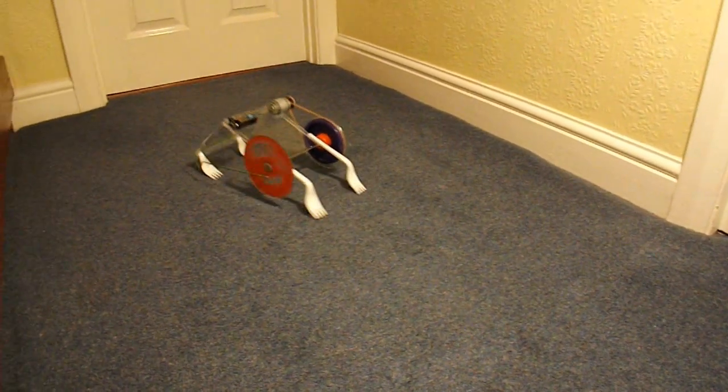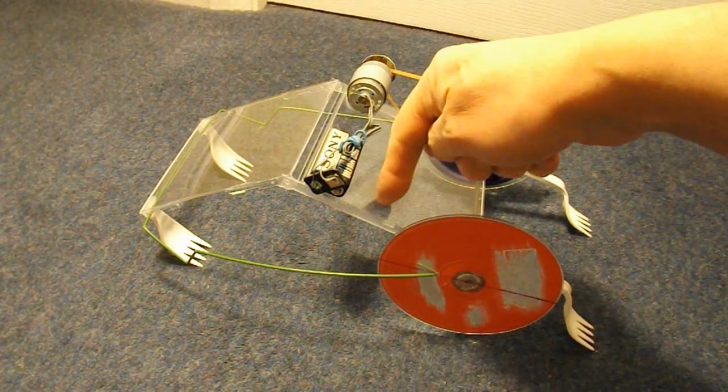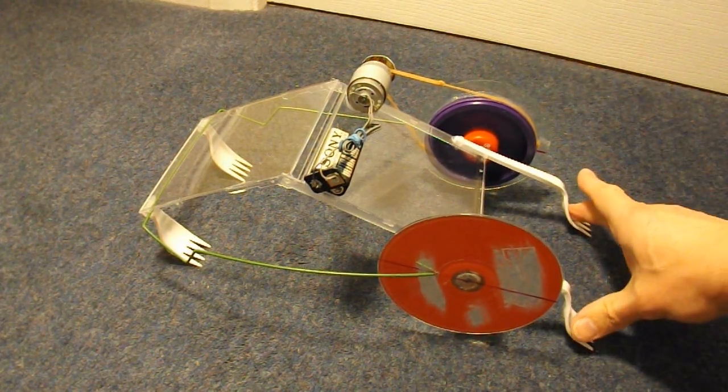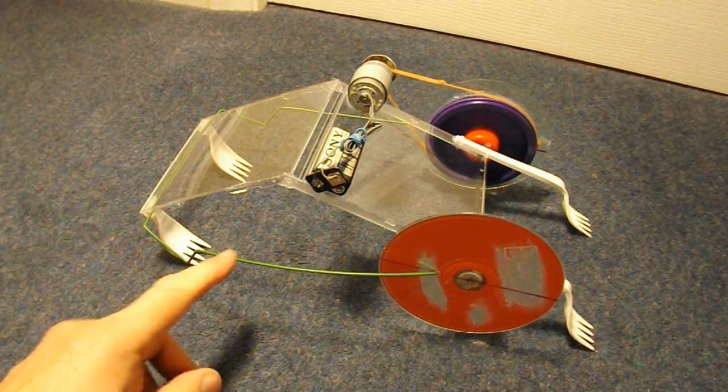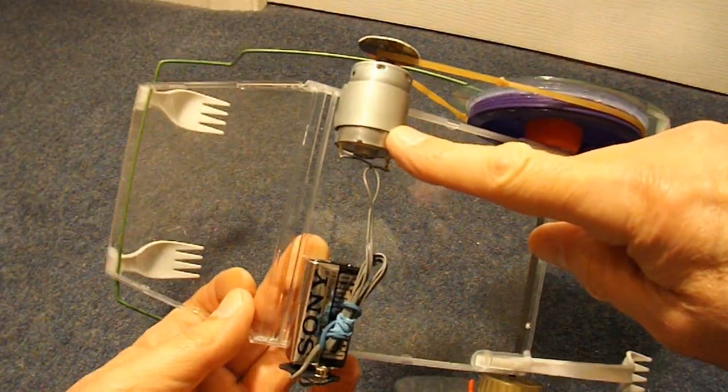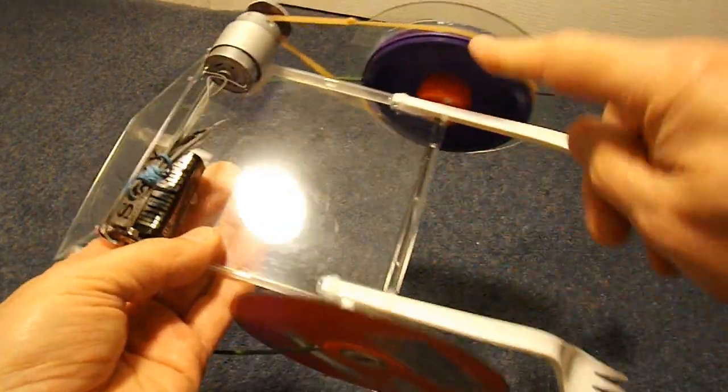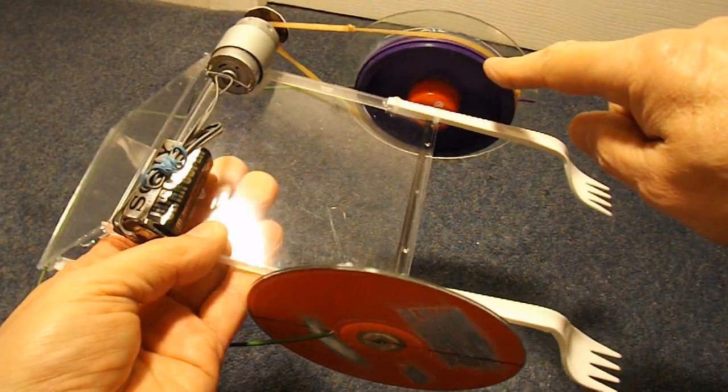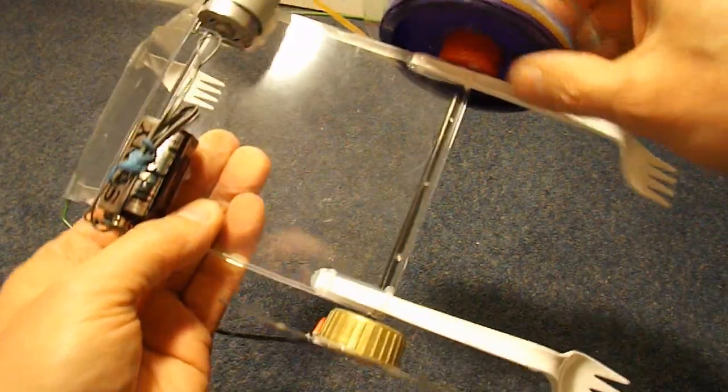Well, that looks like fun. Quick summary. We've got a CD case, two CDs, four plastic forks, some bent wire, electric motor from a printer, nine volt battery, plastic bottle caps, a big bottle cap, well, tin lid, and a rubber band. So that's the pulley.